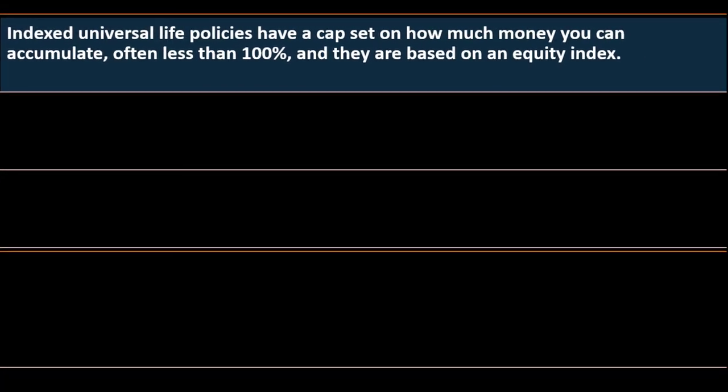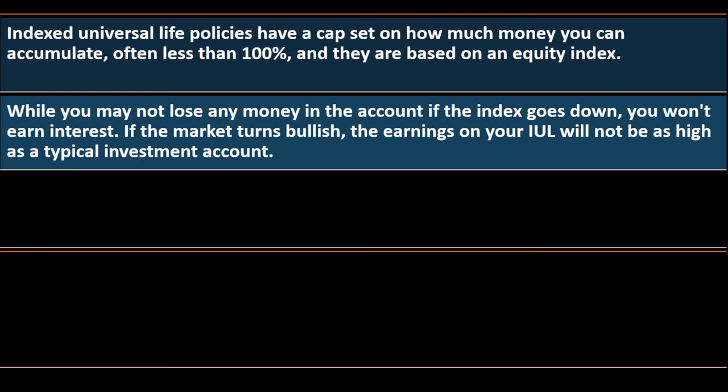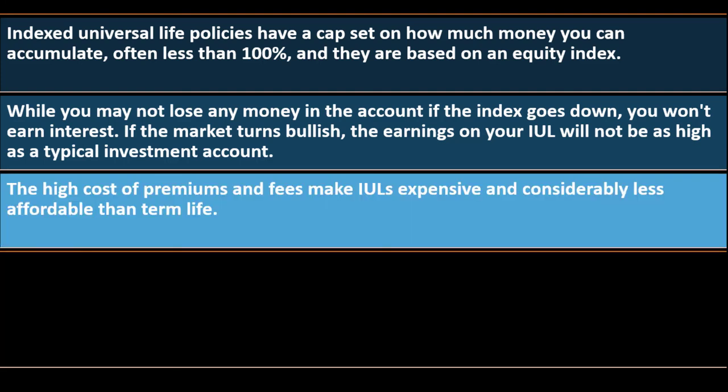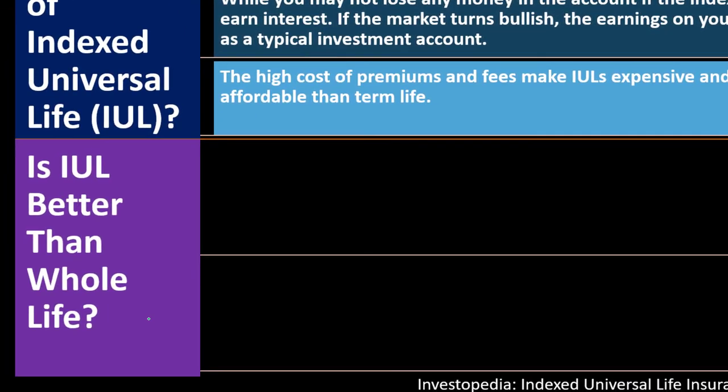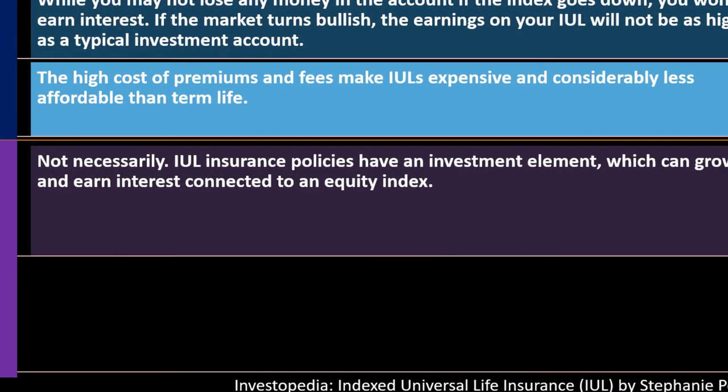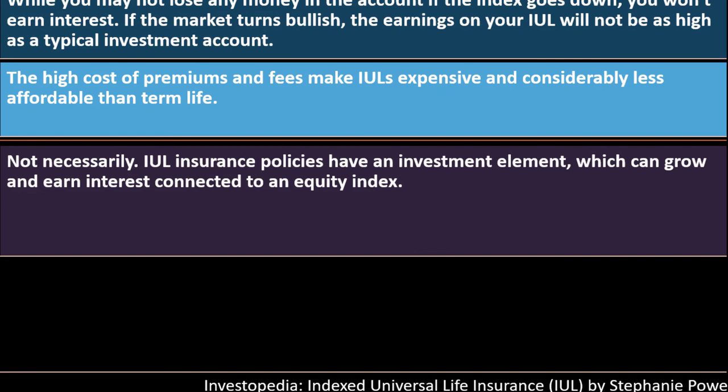What are the cons of an indexed universal life IUL? Indexed universal life policies have a cap set on how much money you can accumulate, often less than 100%, and they are based on an equity index. While you may not lose any money in the account if the index goes down, you won't earn interest. If the market turns bullish, the earnings on your IUL will not be as high as a typical investment account. The high cost of premiums and fees make IULs expensive and considerably less affordable than term life.